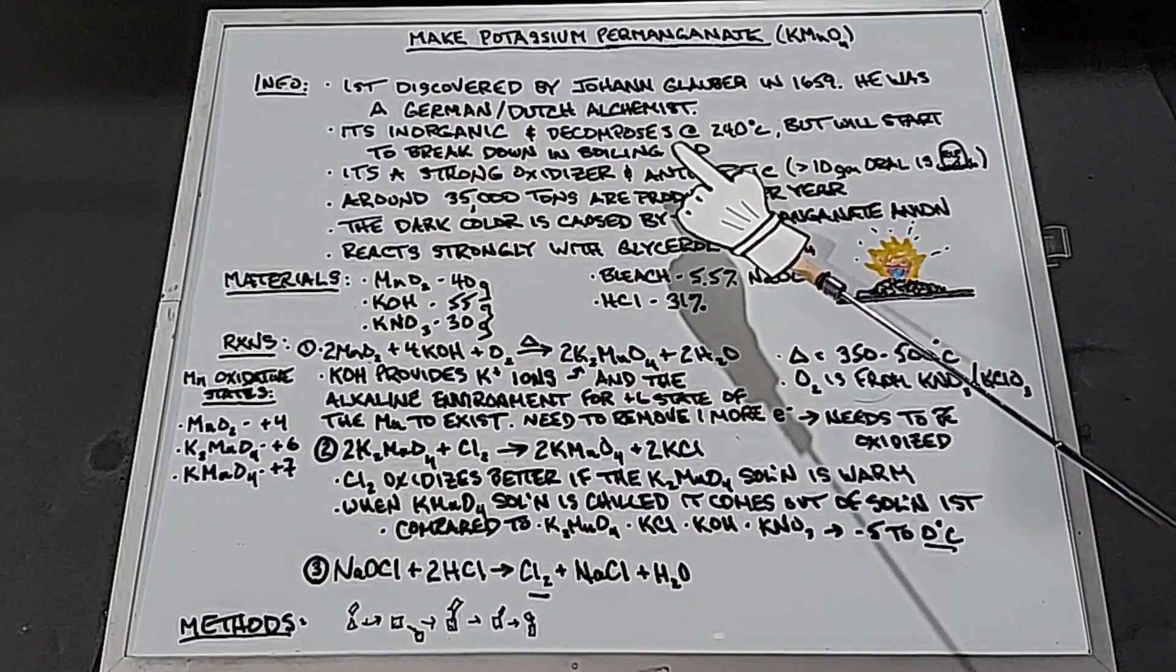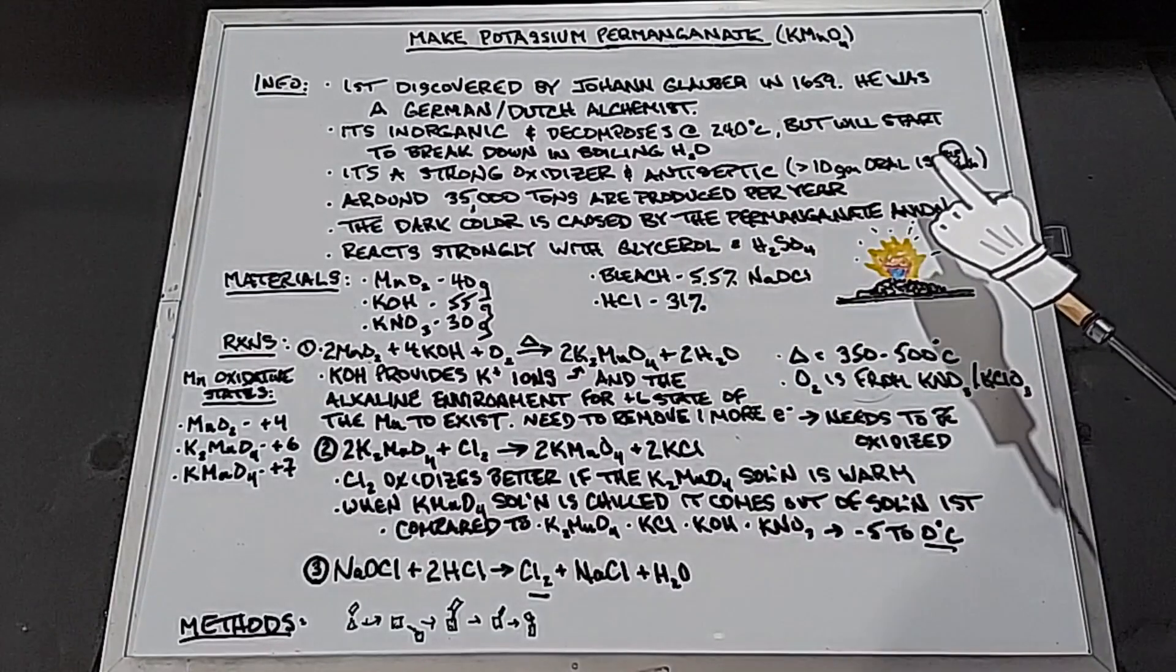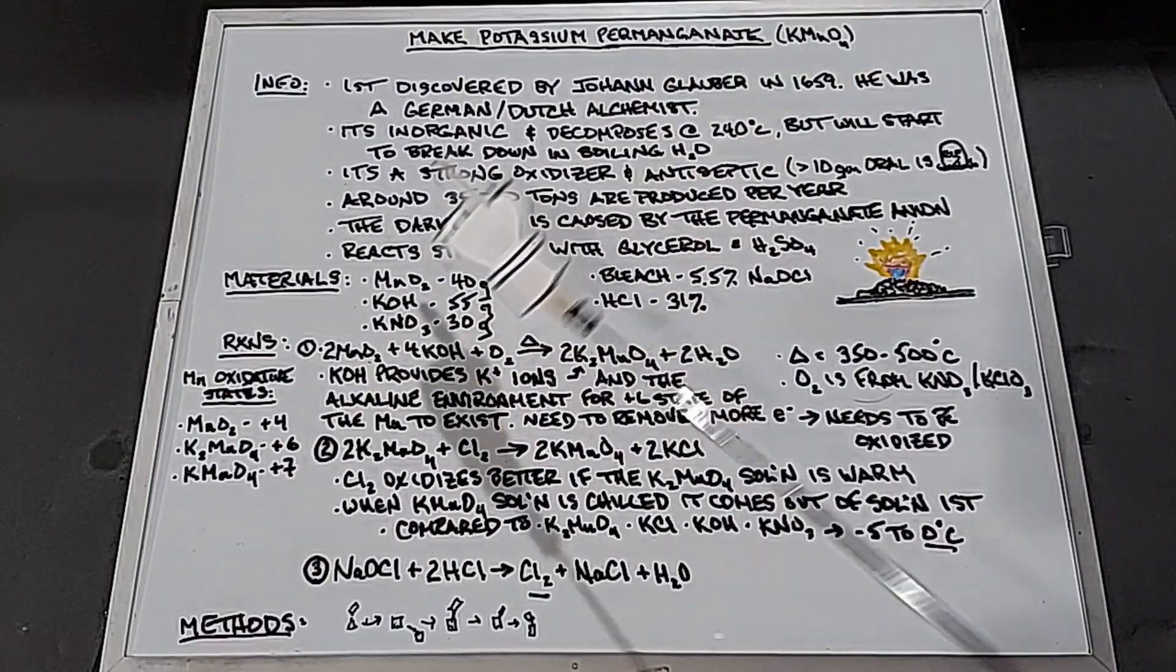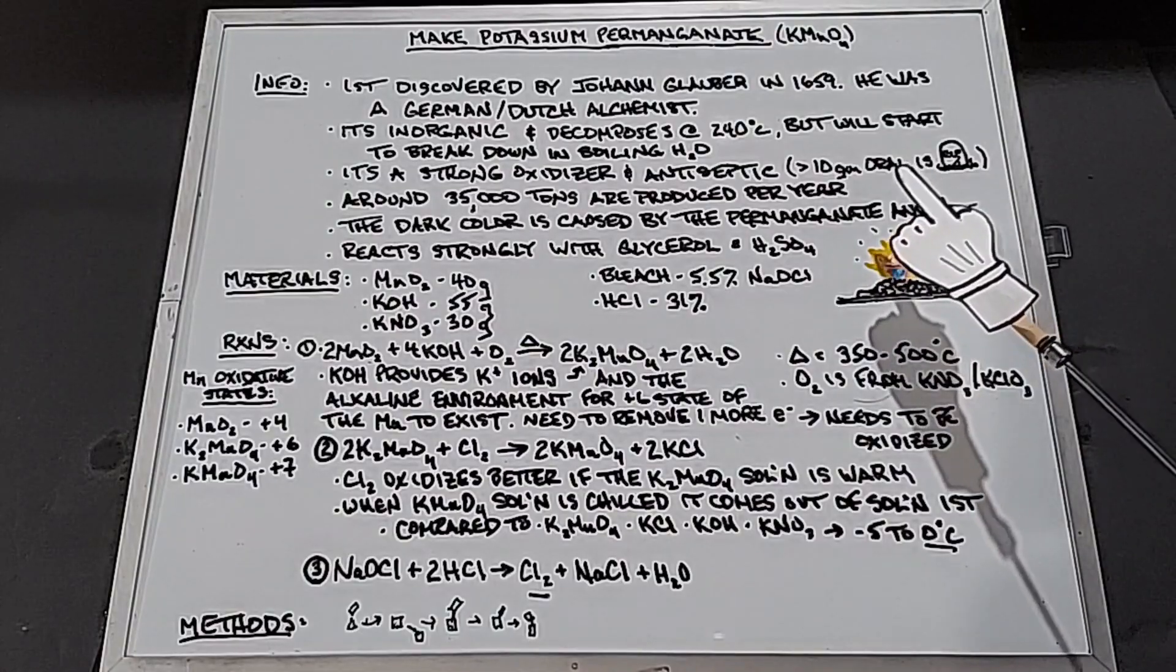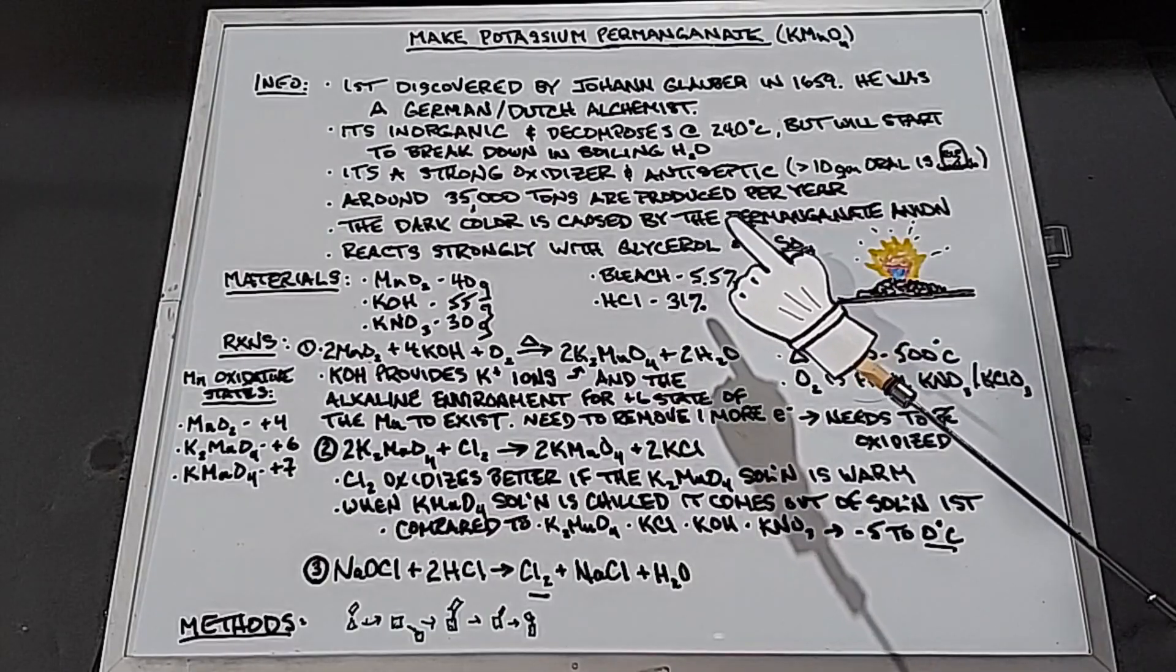Typically, it's used topically, but it has been used internally also, and more than 10 grams orally is no good. A lot is produced per year, around 35,000 tons. The dark color is caused by the permanganate anion, obviously not the potassium cation. Potassium permanganate reacts strongly with glycerol or glycerin and sulfuric acid.